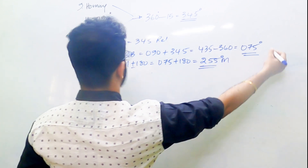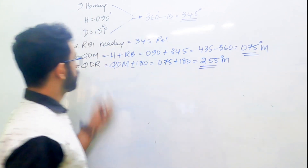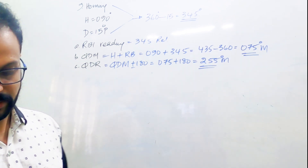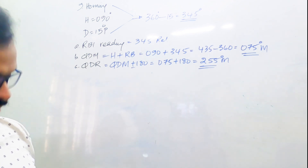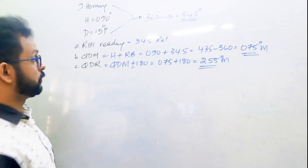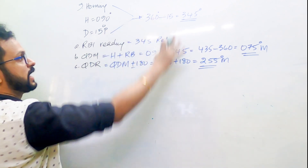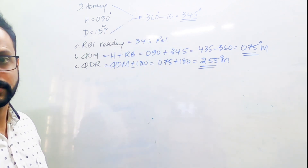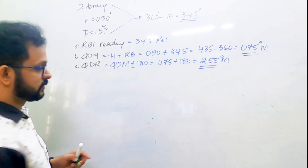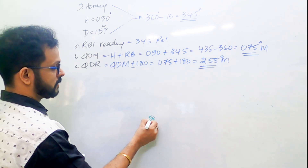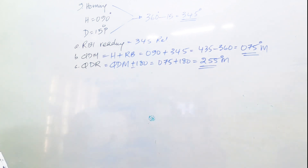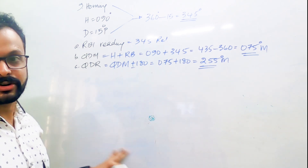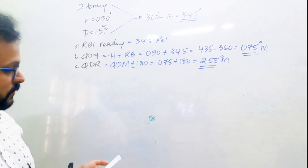These are all magnetic values because QDM is the magnetic track to the station and QDR is the magnetic track from the station. Let's draw a diagram for this question — this kind of working is sufficient for the exam, you don't necessarily need a diagram, but from an understanding point of view: here is the NDB, the aircraft is homing to the station, and the heading is 090. What is the track of the aircraft?